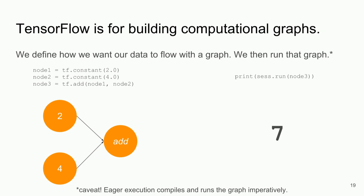There's a giant asterisk here. We want to define how our data flows with the graph and then call that graph — two discrete steps. As described, as of TensorFlow 1.7, there is what's called eager execution mode, which does imperative programming such that when you define an operation it runs just in time and produces the output. I suspect this slide will not age well for the ways we come to know TensorFlow.